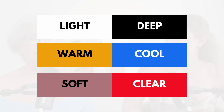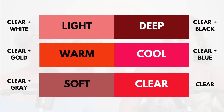Each one of these dominant characteristics puts an attitude onto a particular color — they change a color to suit each characteristic. Let's look at red. Starting with the clear color — clear is the color of something that comes right out of the tube, the color without anything added to it. When you want to make a clear color suitable for a light person, you add white. When you want to make that same clear color suitable for someone who's deep, you add black.